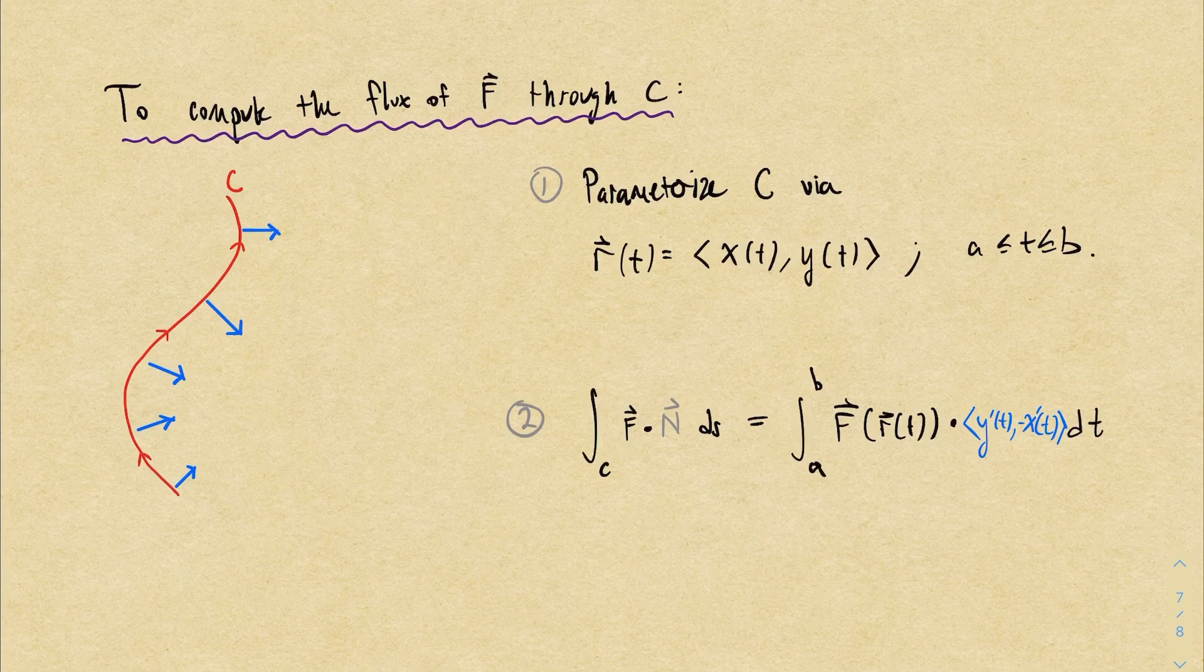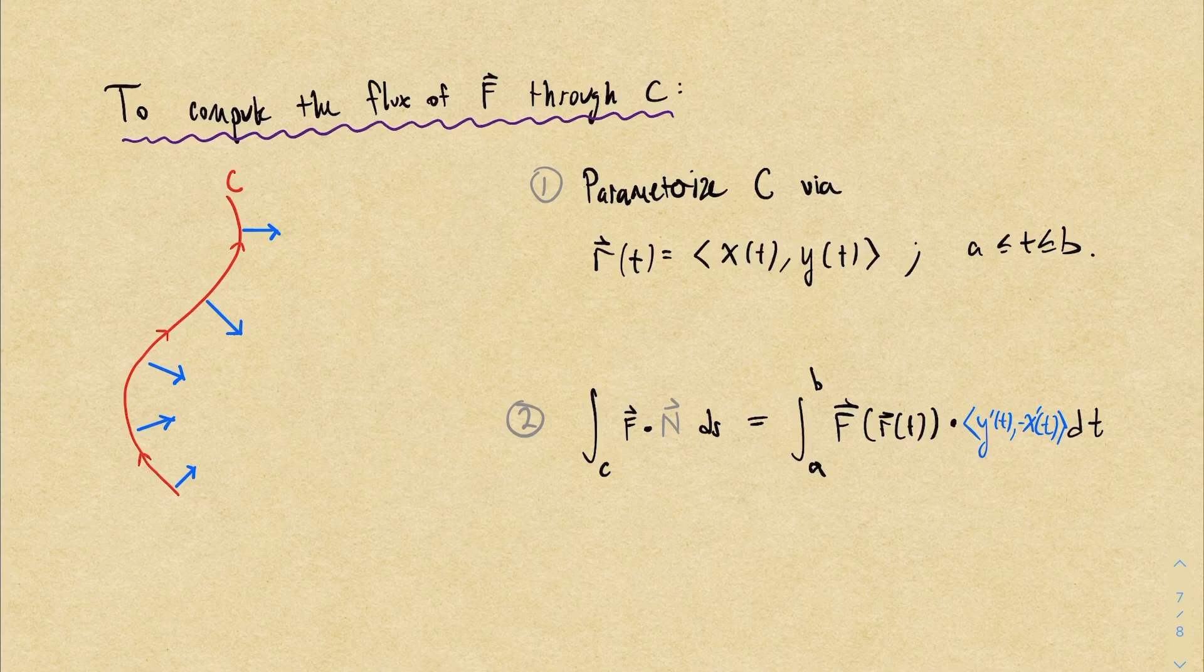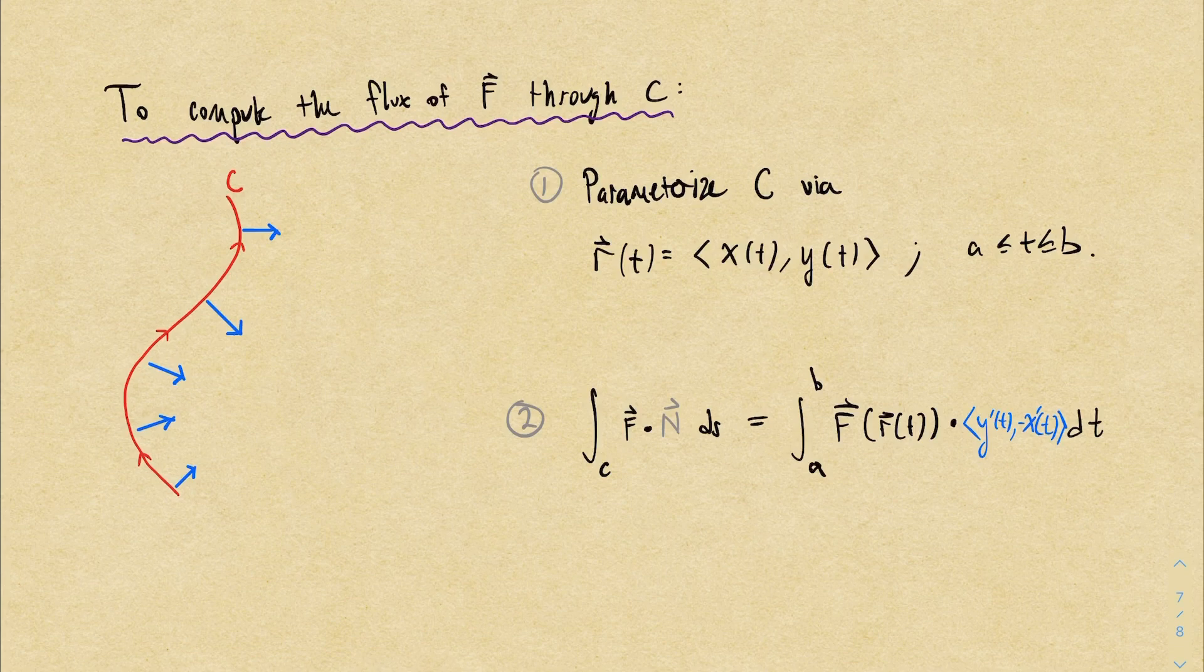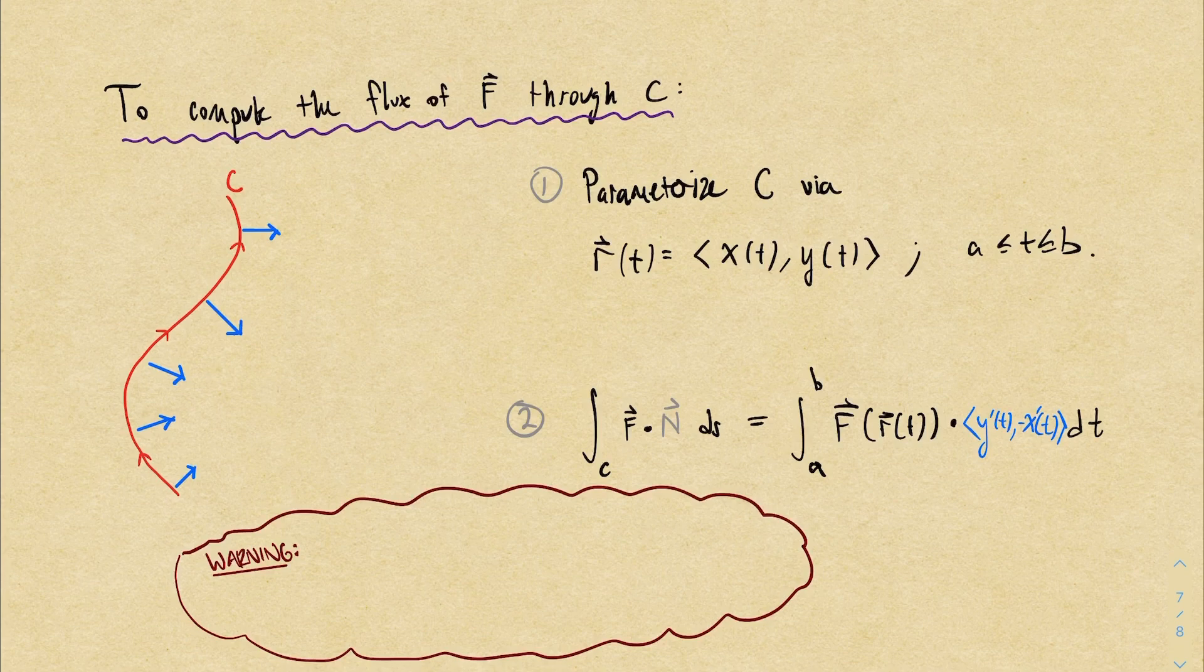So computing the flux of a vector field through a curve is the same as setting up a vector line integral. But instead of using r prime, you reverse the order of the components and then add a negative sign to the new second component.